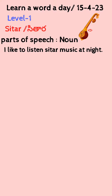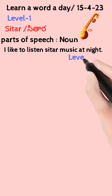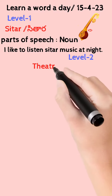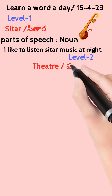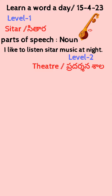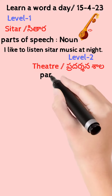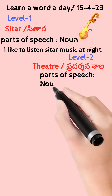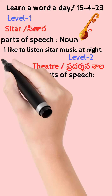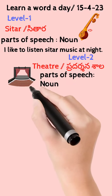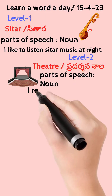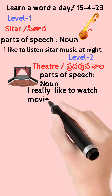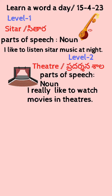Now level 2, for classes 3, 4, and 5. The word is theater. Pradarsana sala — theater. Parts of speech: noun. And its model image. Uses: I really like to watch movies in theaters.